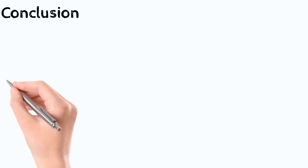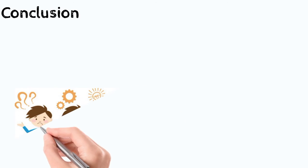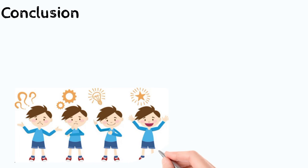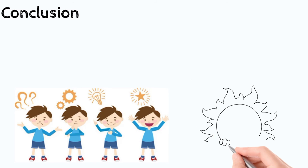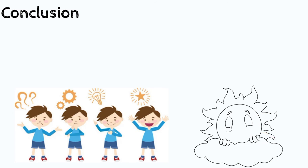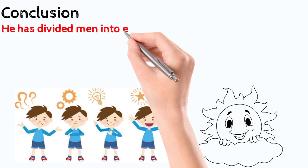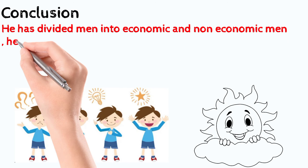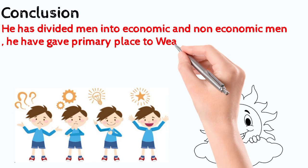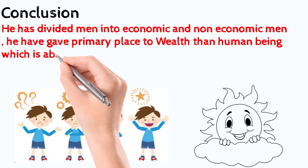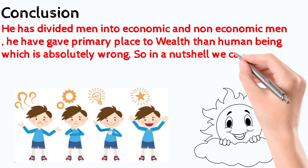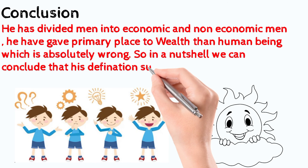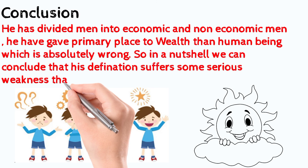Now let us conclude today's video. From this video, I think all of you have understood Adam Smith's definition of economics. After analyzing this video, we conclude that Adam Smith's definition is not practically applicable or true in the present world. He divided men into economic and non-economic men and gave primary place to wealth over human beings, which is absolutely wrong. In a nutshell, his definition suffers from serious weaknesses that need to be corrected.